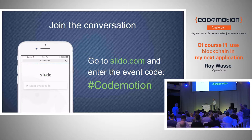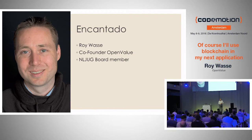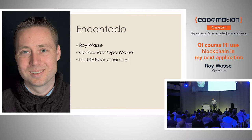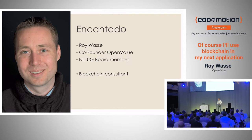Alright, let's get started. I only got 40 minutes. Normally this talk is an hour, and it's based on a training of one day. My name is Roy Wassen. I'm the co-founder of a company called Open Value. We're all about discovering new technologies, the Java ecosystem, building cool stuff basically. I'm also a JUG board member — Java user group. And I'm kind of a blockchain consultant involved in some different projects currently, and a cryptocurrency fan as well.